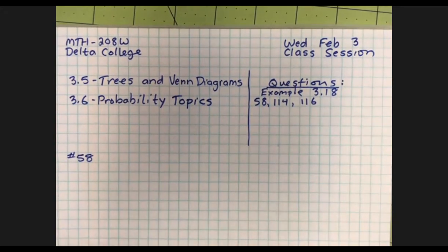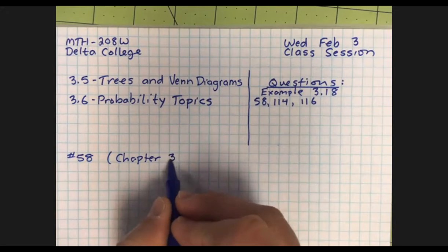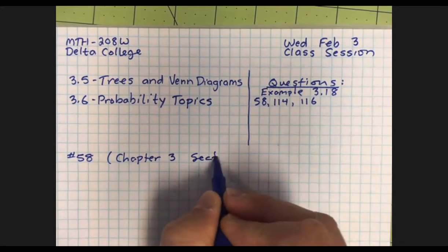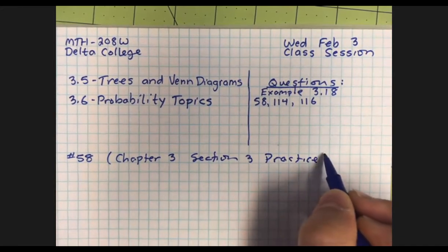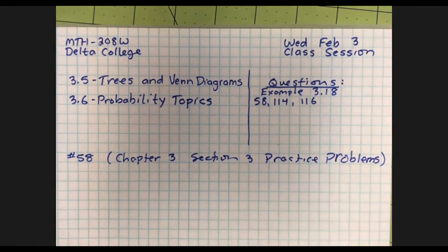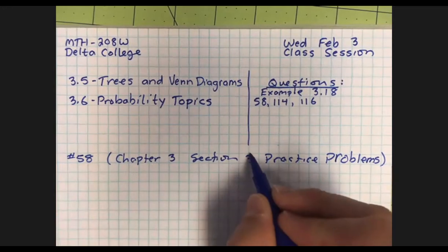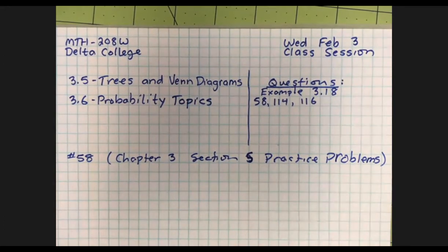This would be in chapter 3, section 3.5, practice problem. It says the probability that a man develops some form of cancer in his lifetime is 0.4567. So let's say C is 'man develops cancer during his lifetime.'